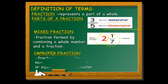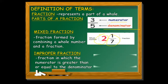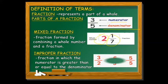An improper fraction is a fraction in which the numerator is greater than or equal to the denominator. Usually in an improper fraction the numerator is larger, or they can be equal.